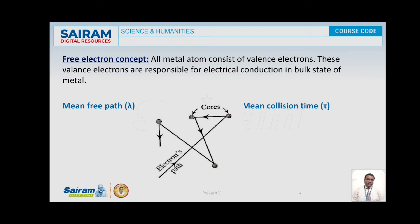Similar to this, we can explain mean collision time, denoted by symbol tau. Mean collision time is the average time that elapses between successive collisions with the lattice sites. Consider an electron: let t1 be the time taken between two successive collisions, t2 be the time for the next collision, and t3 for another collision. If there are n collisions, then the mean collision time tau equals (t1 + t2 + t3 + ... + tn) divided by n.